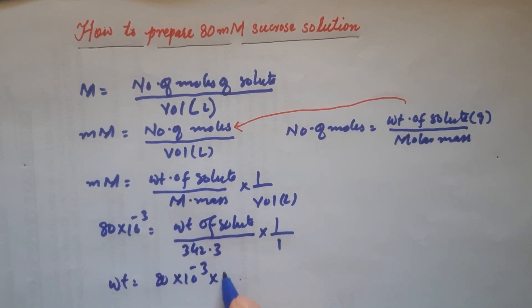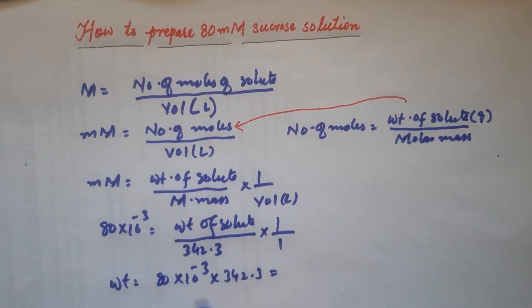So 80 times 10 to the power minus 3 times 342.3. Now you simply need to multiply all this and you would get the weight. This comes out to be 27.8 grams.